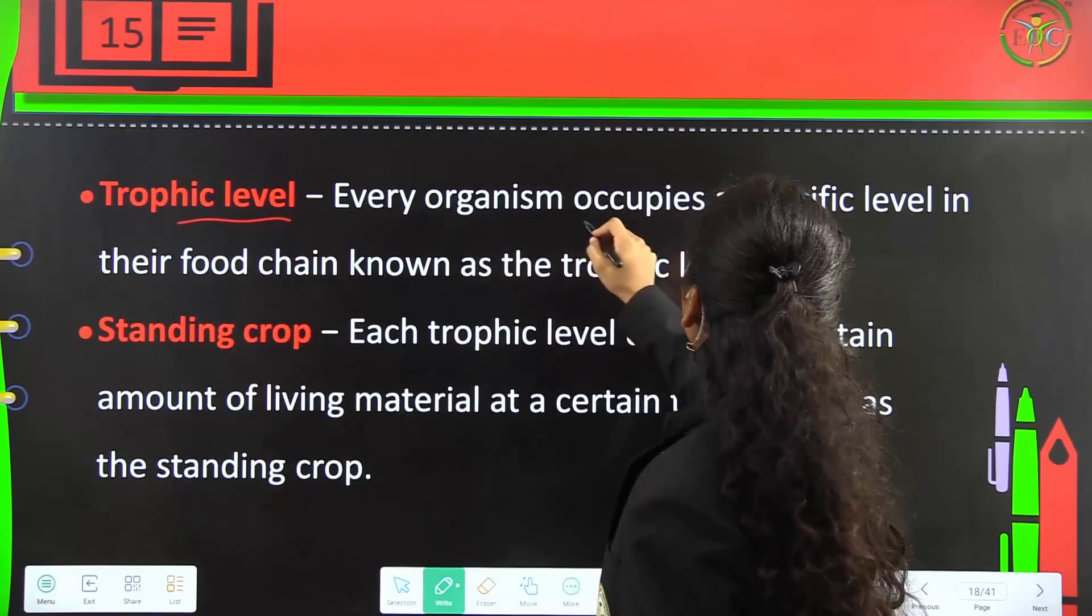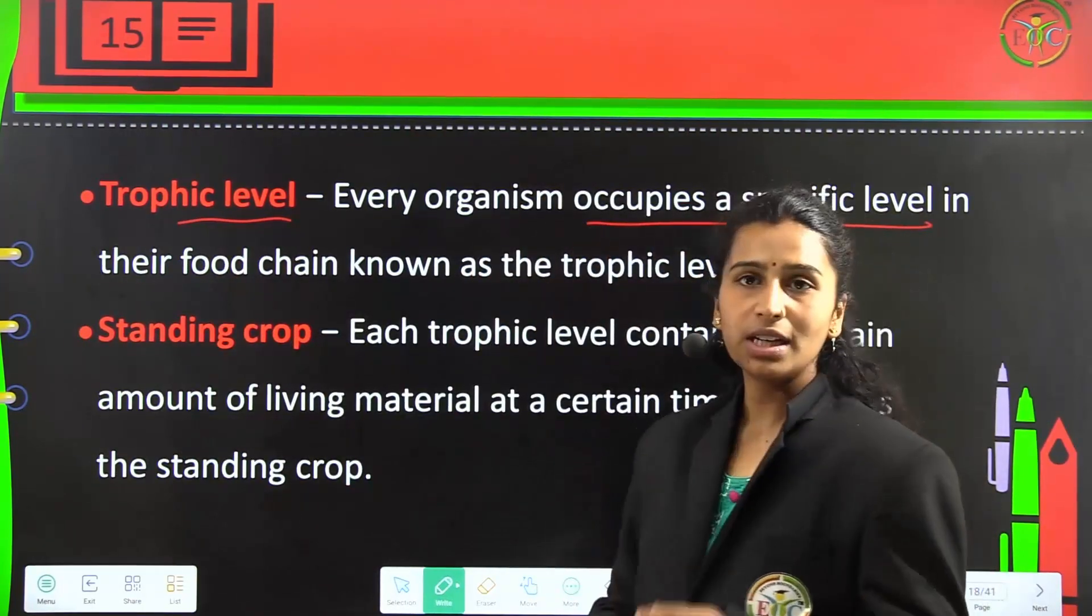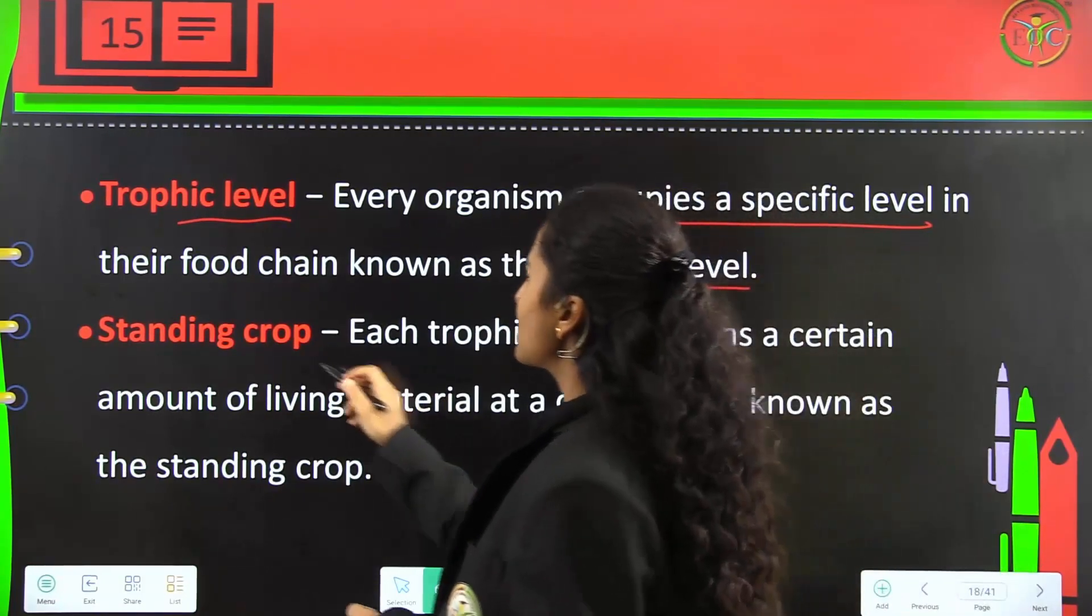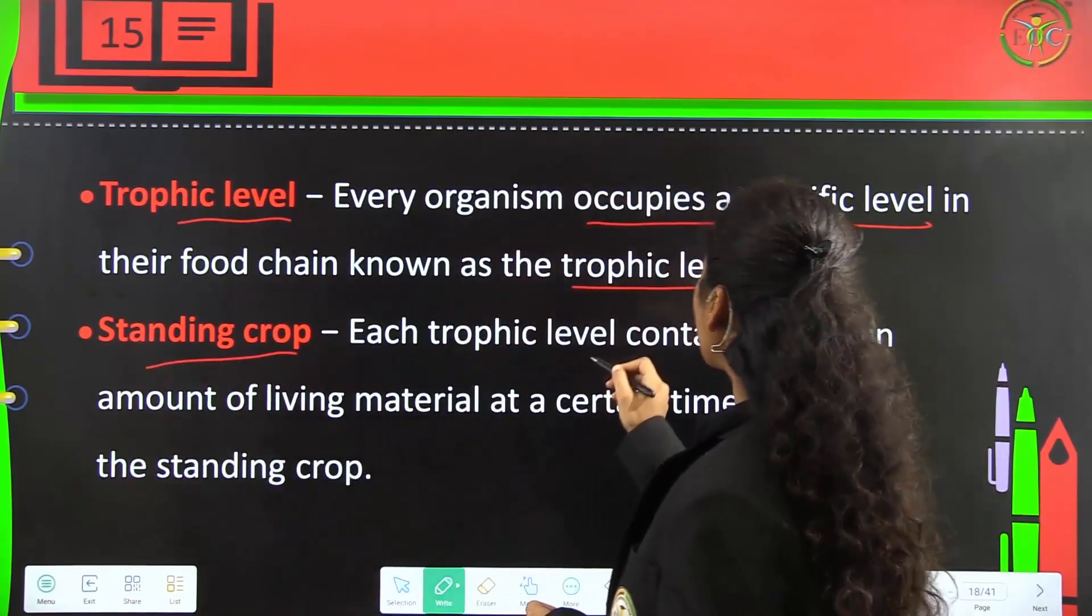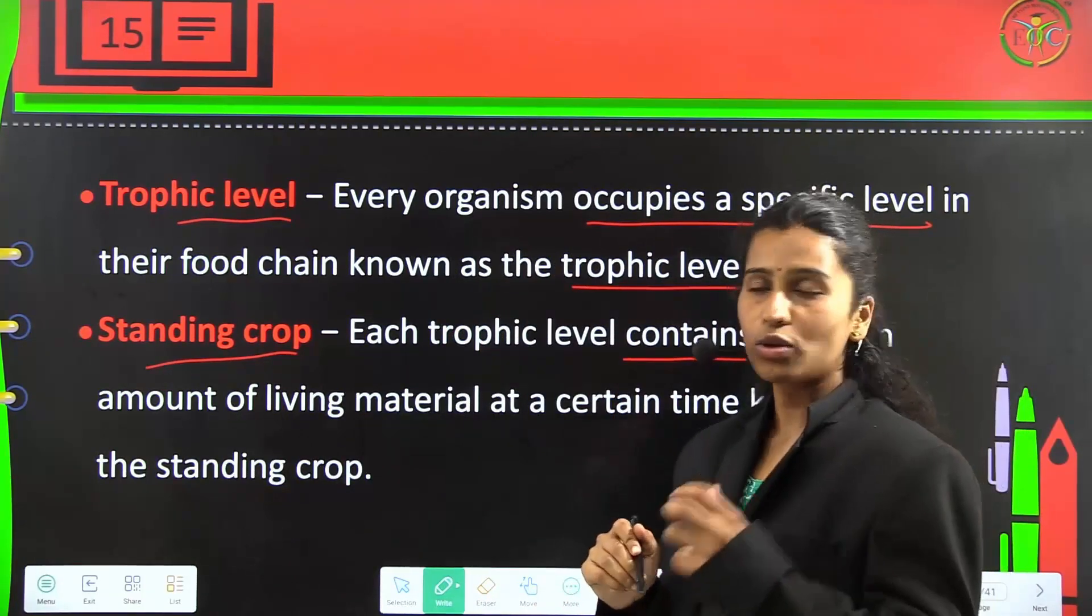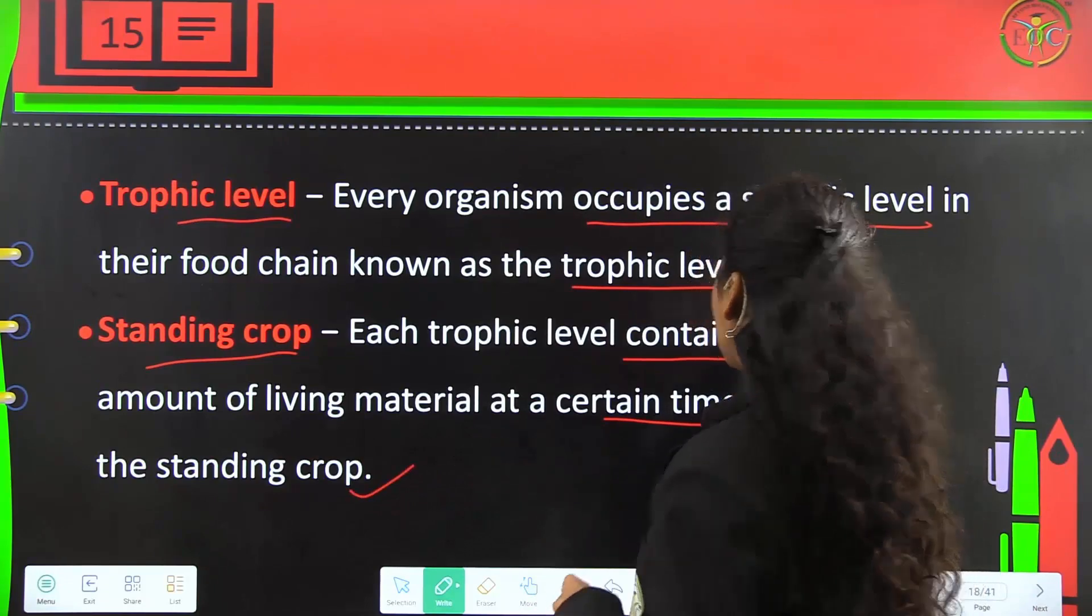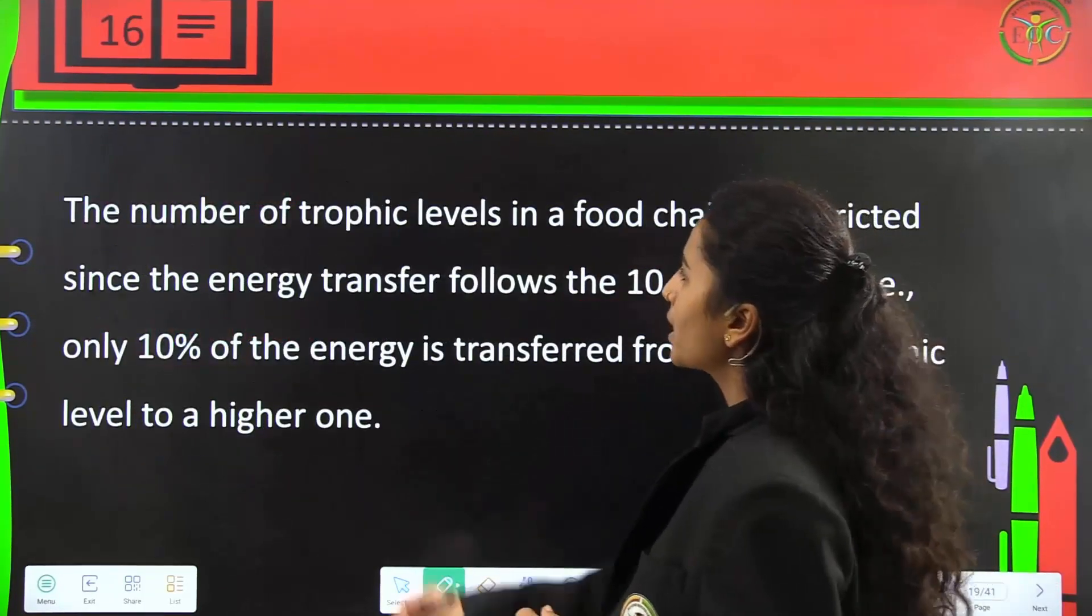Trophic level: Every organism occupies a specific level in their food chain, which is the trophic level. Standing crop: Each trophic level consists of certain amounts of living material at a certain time, known as the standing crop.